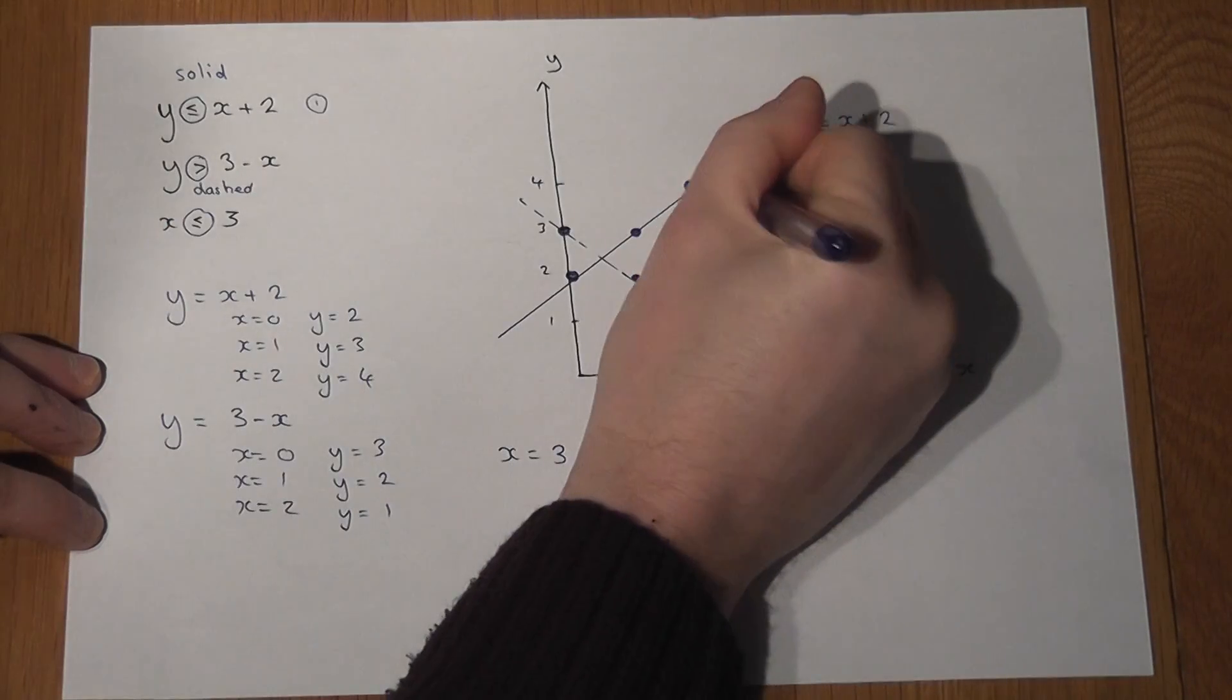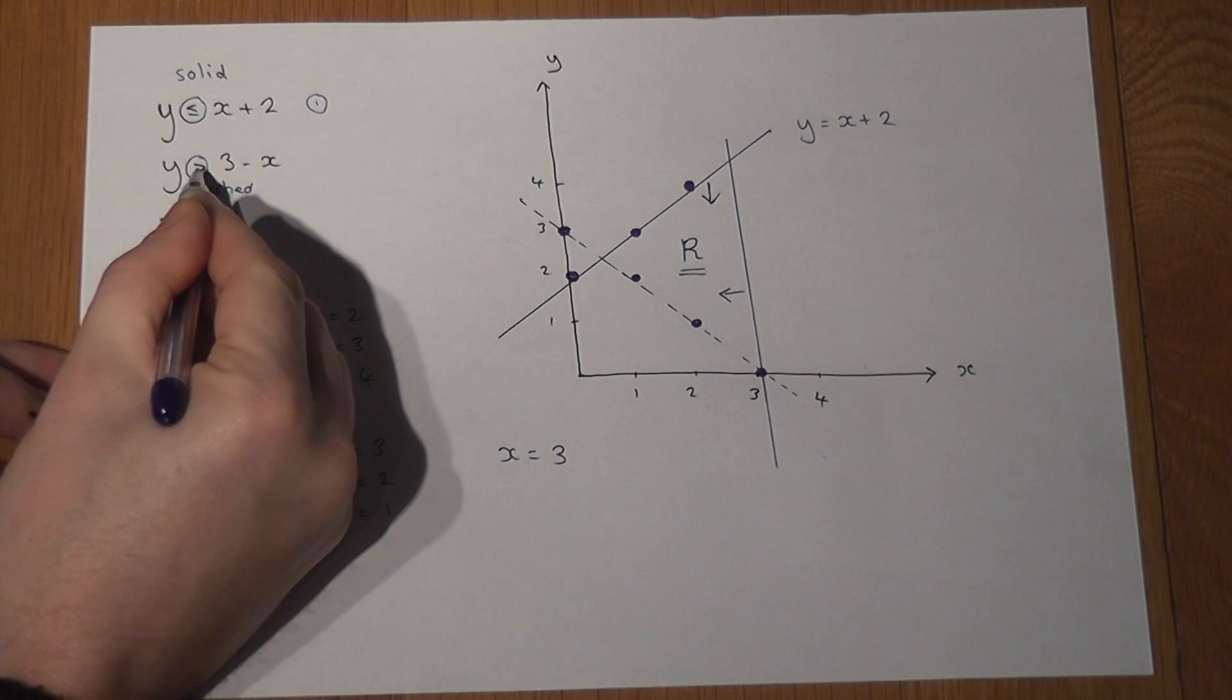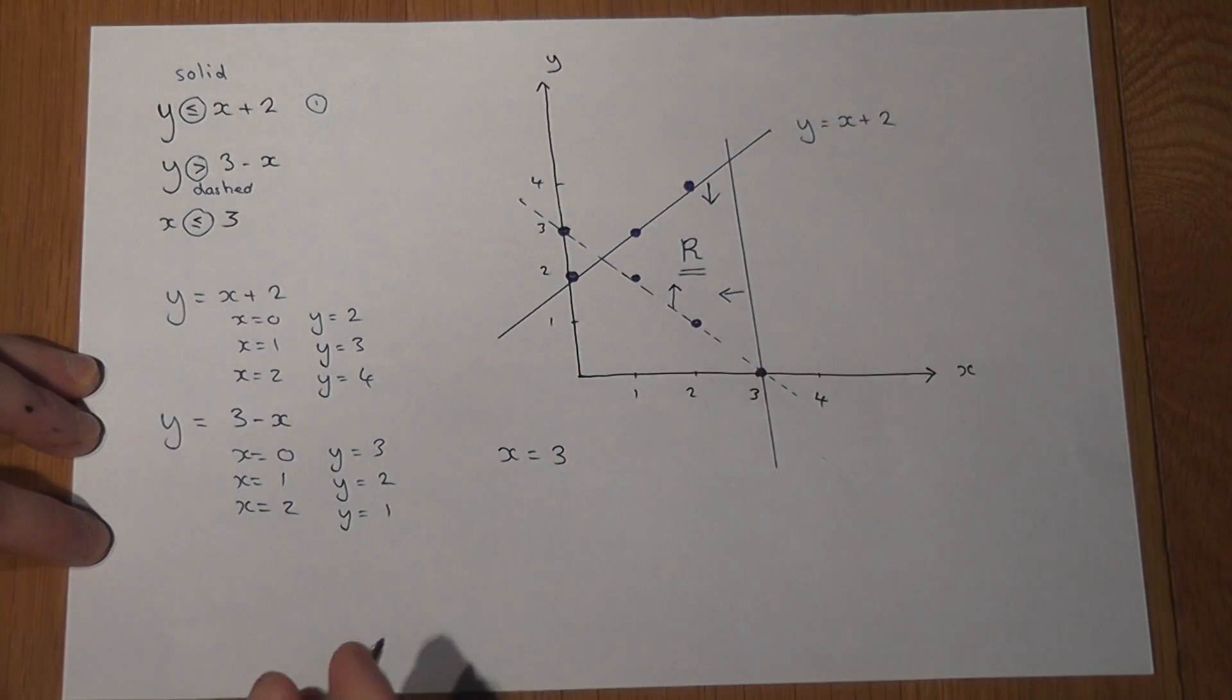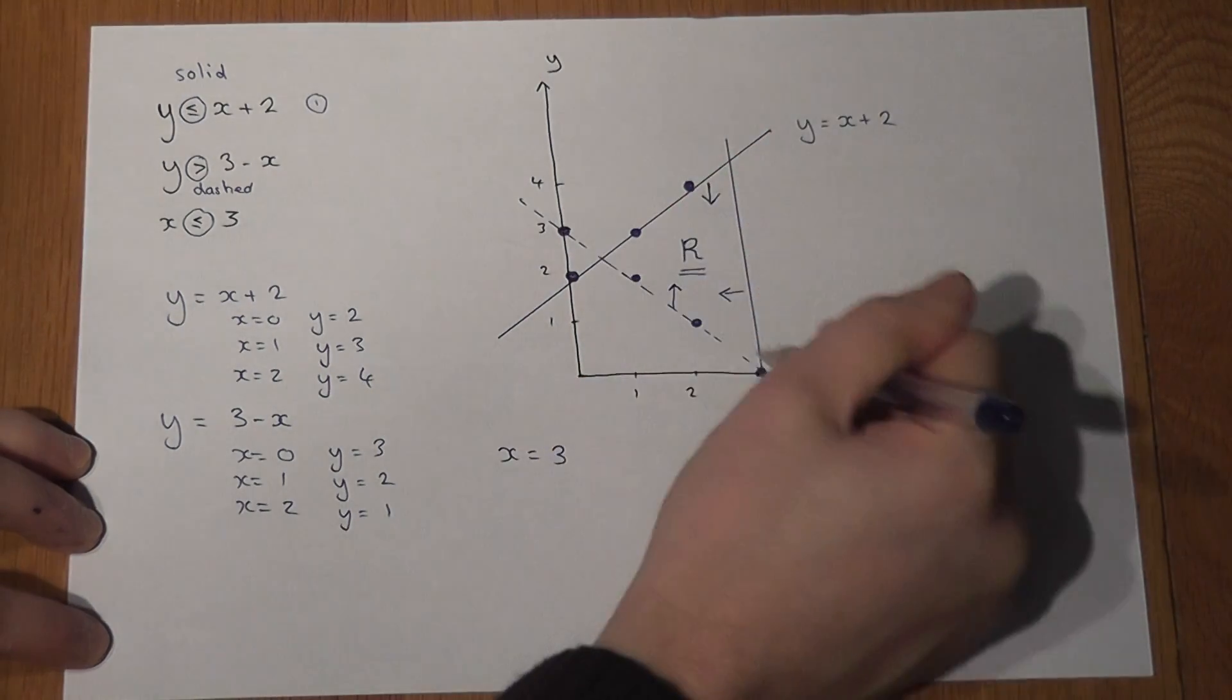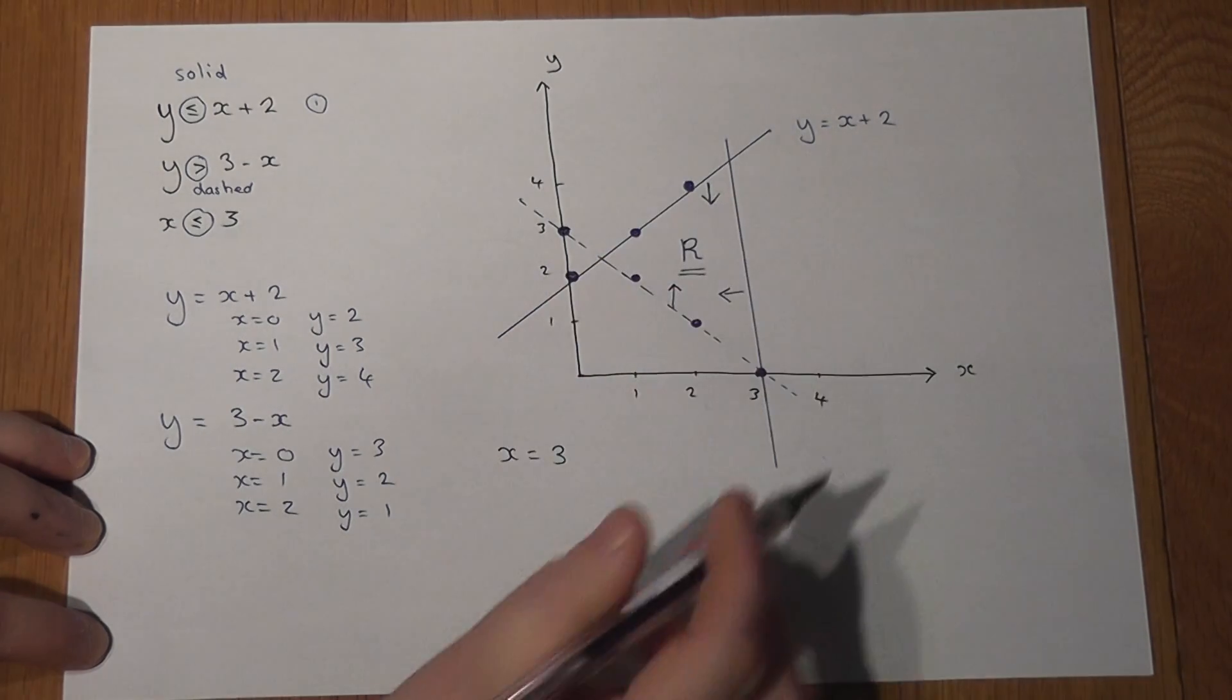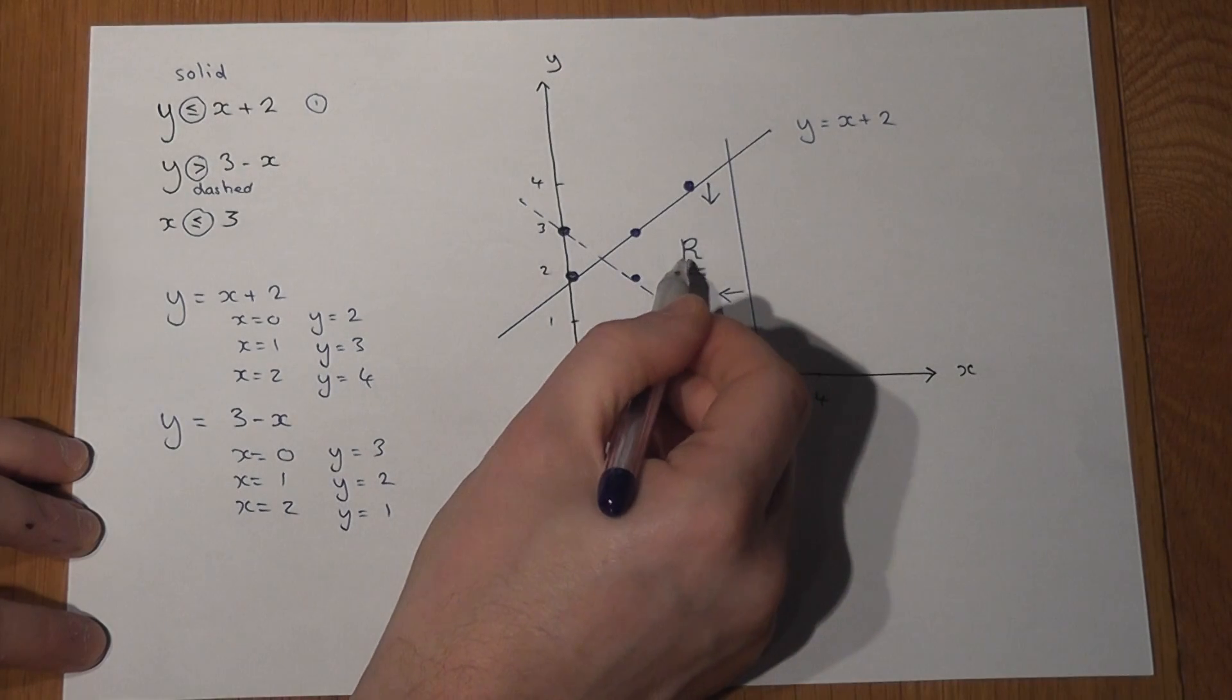y is below x plus 2 but y is above the 3 minus x line. And in these questions we're always left with a small region to label with an R or to shade in. Normally in the exam they ask you to label it with the capital letter R.